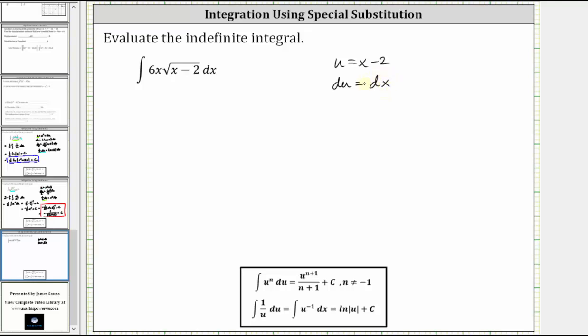Notice right now we don't have enough information to write the entire integral in terms of u because of this extra factor of x outside the square root. So what we're going to do now is solve u equals x minus two for x by adding two to both sides, which gives us x is equal to u plus two.